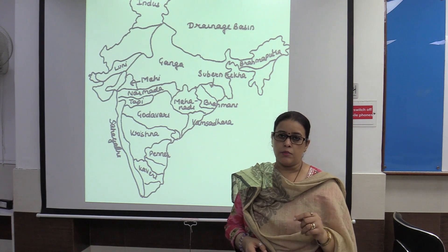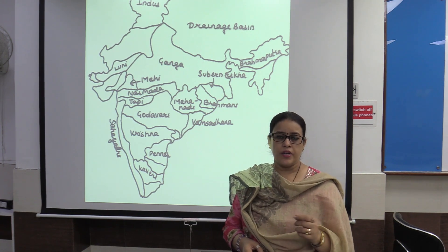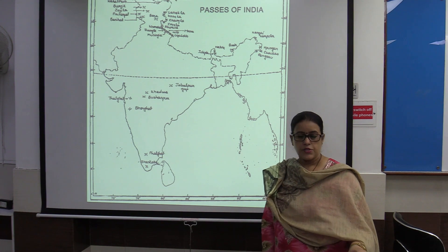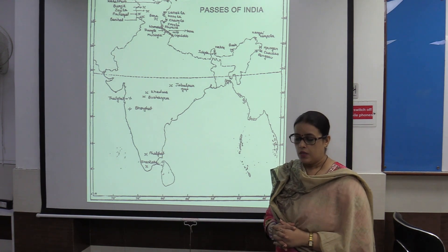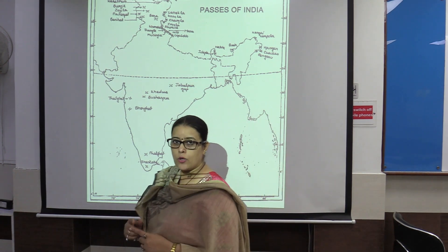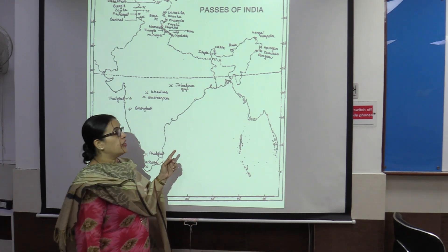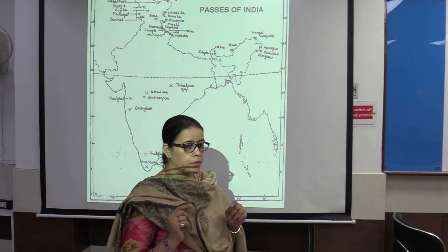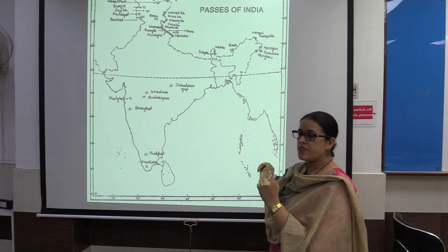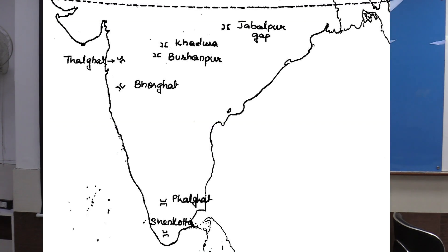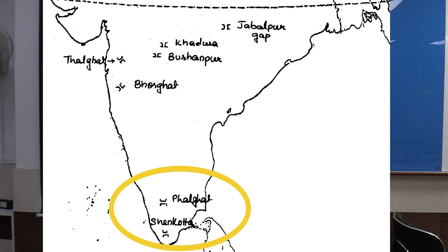Continuing with conventional physical items, now taking other physiographic units swiftly, as we want to devote more time to regional and dynamic aspects. In the continuity of conventional map items, after rivers and mountains, we take a swift revision of passes of India. A general incomplete reference is that we restrict study only to Himalayas. But before that: Jabalpur Gap, Khandwa Gap, Burhanpur Gap, Bhorghat, Talghat Gap, Palghat, and Shenkota Gap are the important gaps that must come into reference.